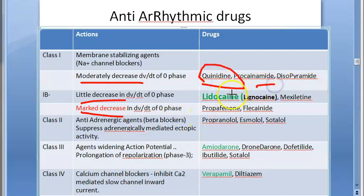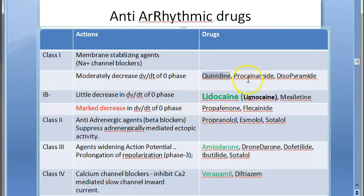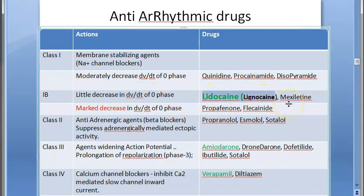Class 1A drugs include quinidine and procainamide. Class 1B includes lidocaine, which is important for exams — it is the same drug as lignocaine used as a local anesthetic, though the formulations differ. Class 1C includes propafenone for marked decrease in dV/dt of phase 0.